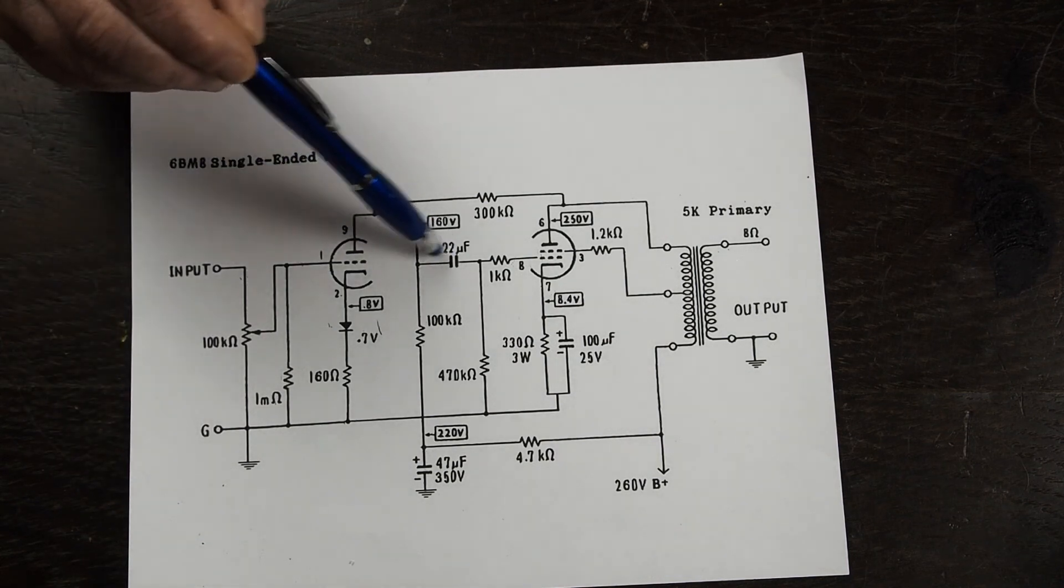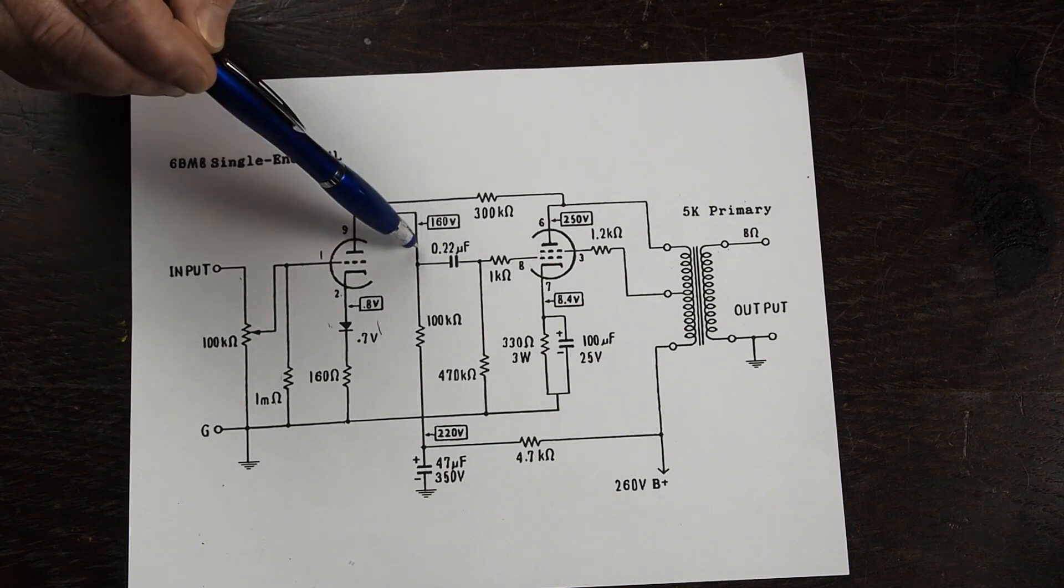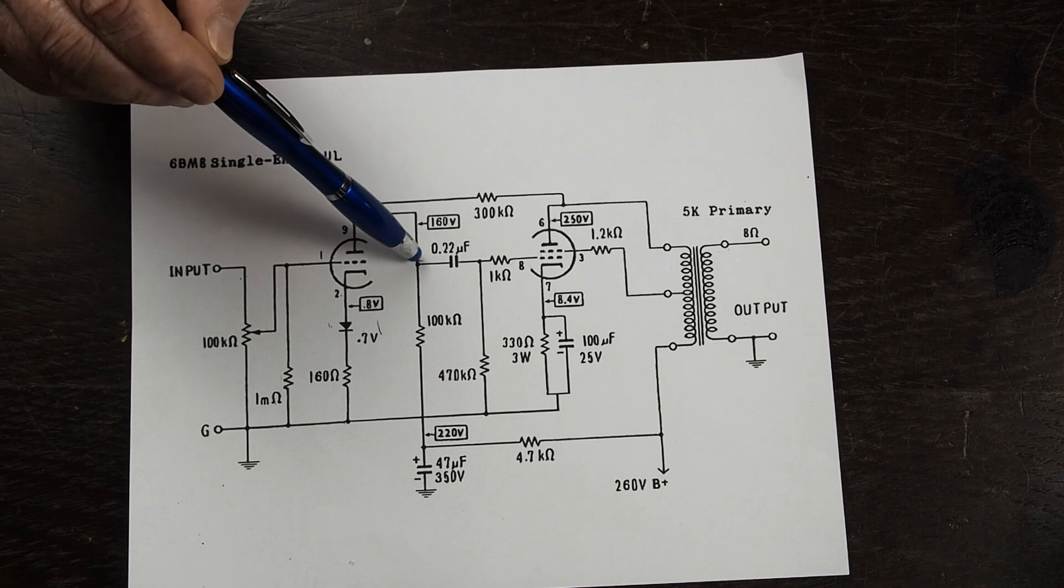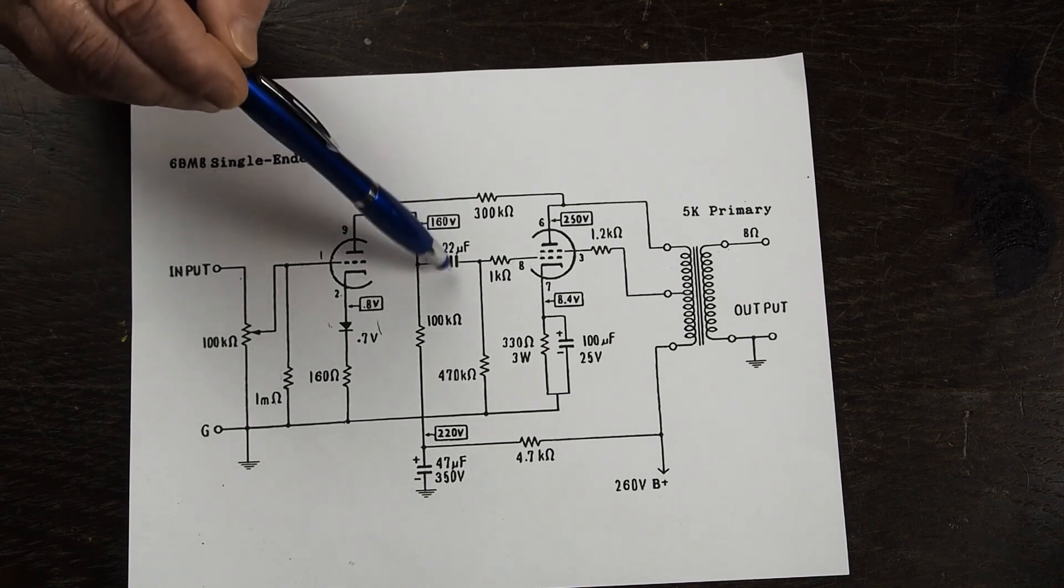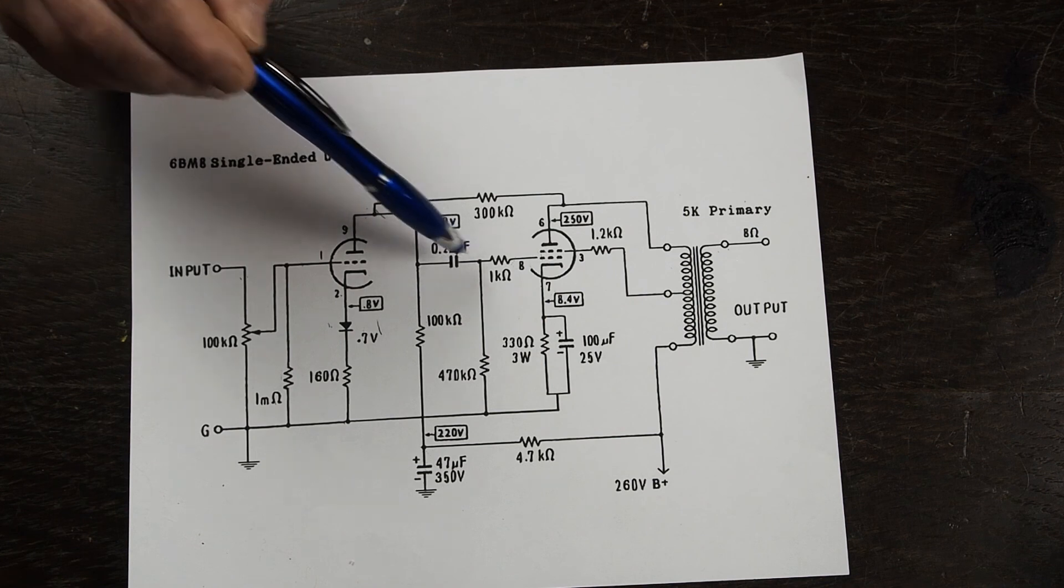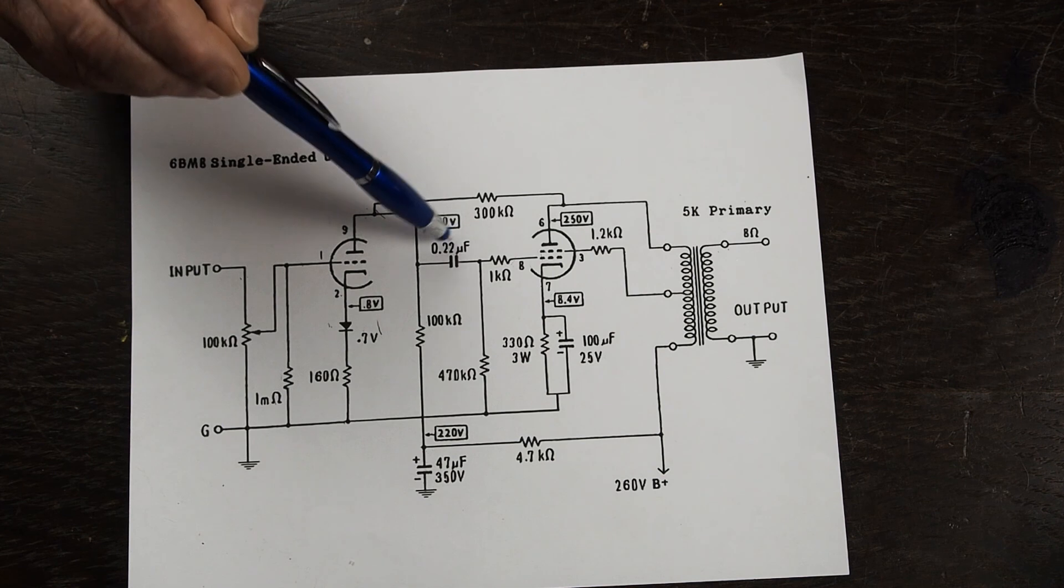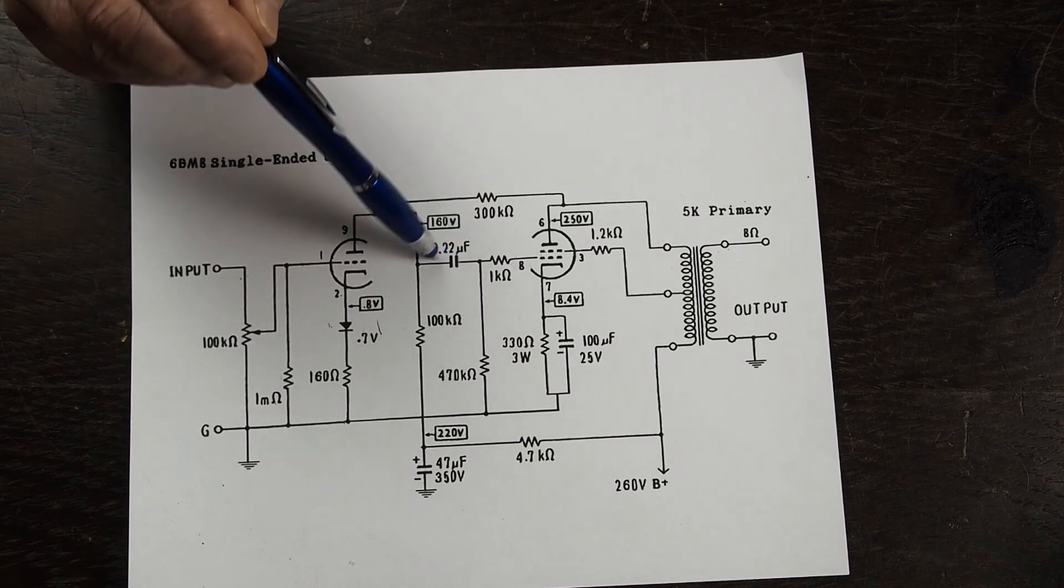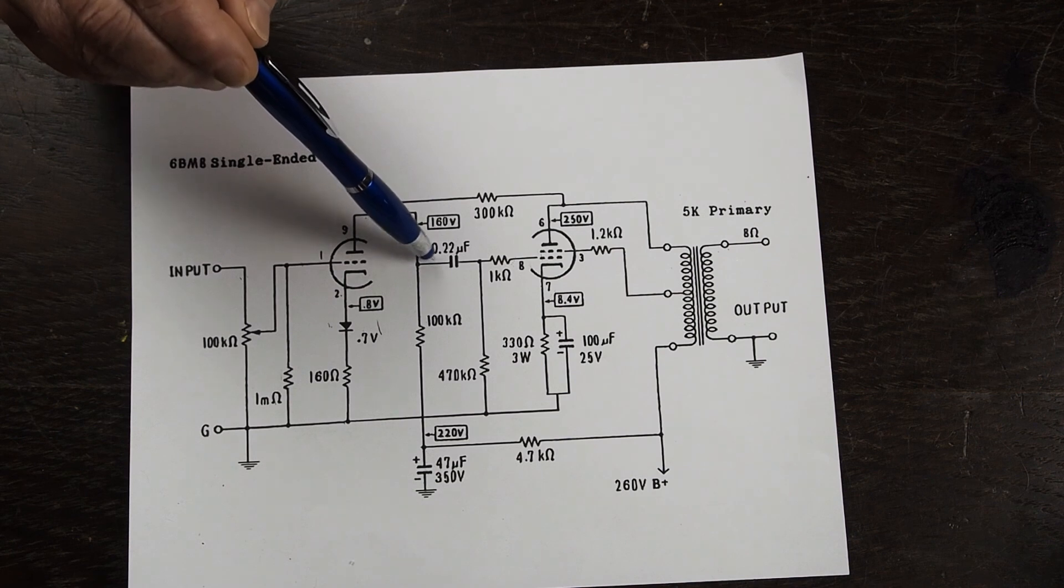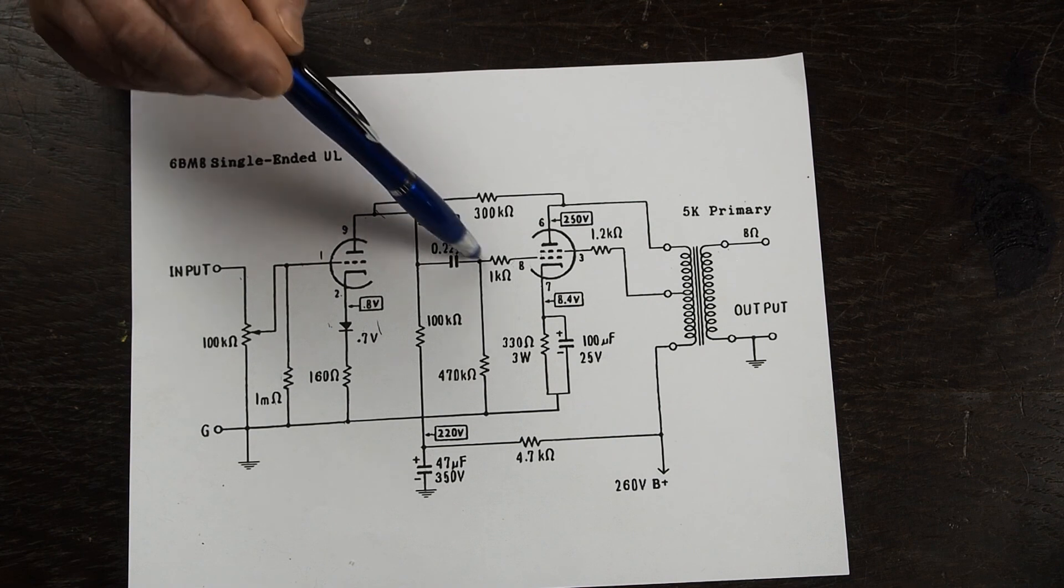So at this point we've also got this 160 volts of DC with 20 volts swing or 30 volts swing of signal voltage. Here we want the signal voltage swing which is AC to go through this capacitor but we want to block the DC which is what this coupling capacitor does. So on this side we've got 160 volts of DC, on this side we don't.